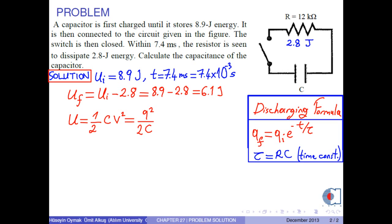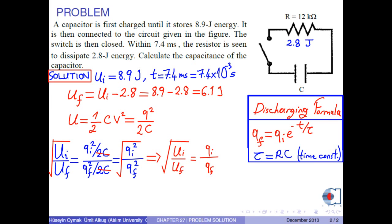The ratio of the initial energy to the final energy is Q initial squared over 2C divided by Q final squared over 2C. Two C's cancel each other. Now, we obtain Q initial squared over Q final squared. Since both sides are positive, we can take the square root of both sides. So, we obtain square root of U initial over U final equals Q initial over Q final.